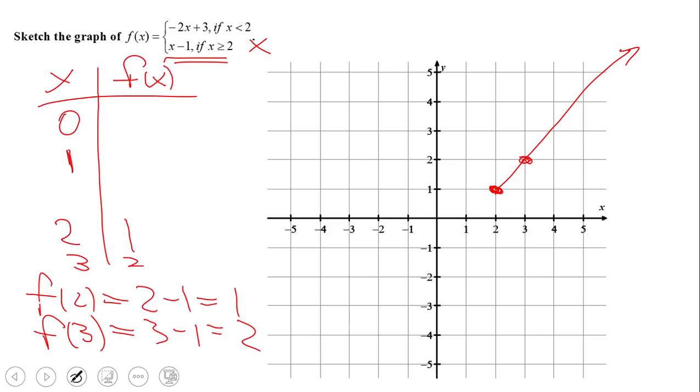And then sometimes you can do some mental math. Like for 0, negative 2 times 0 is 0 plus 3 is 3. So the point we have, and I should have used a different color, let me use that one. The point we have here is 0 and 3.